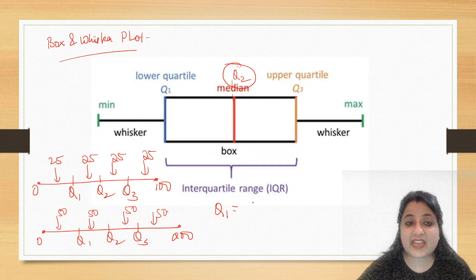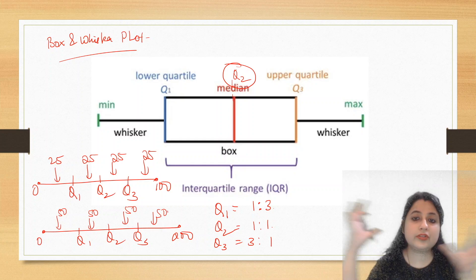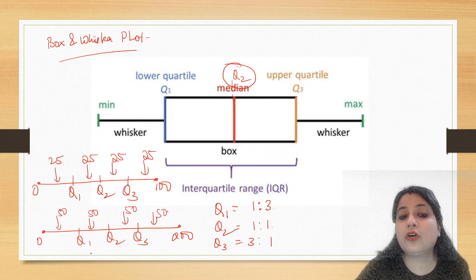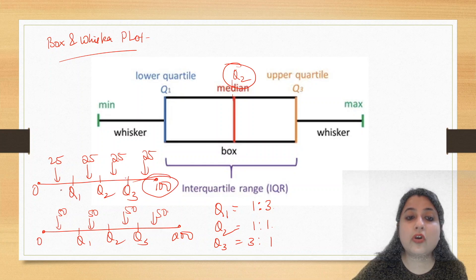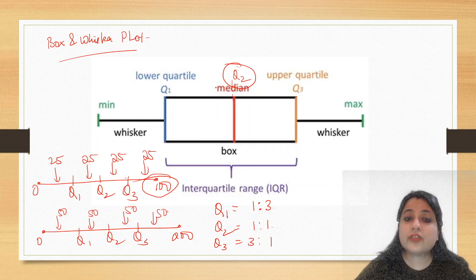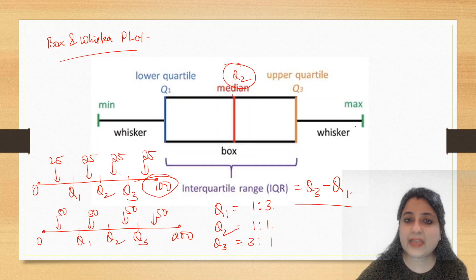Q1 is always dividing my data set into 1 is to 3. Q2 is dividing in 1 is to 1, and Q3 in 3 is to 1. That means Q1, one part is below, three parts above. Q2, it's exactly equal. Q3, three parts are below and one part is above. These quartiles can also be represented by a box and whisker plot. This is the box which has the three quartiles. Interquartile range is Q3 minus Q1, a measure of dispersion. The whiskers are the tails.